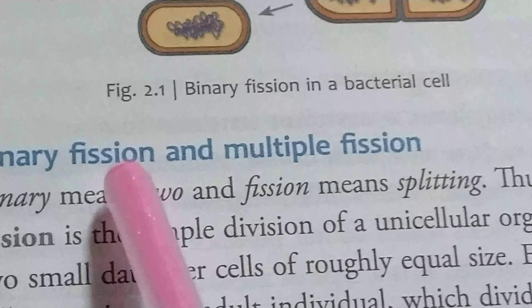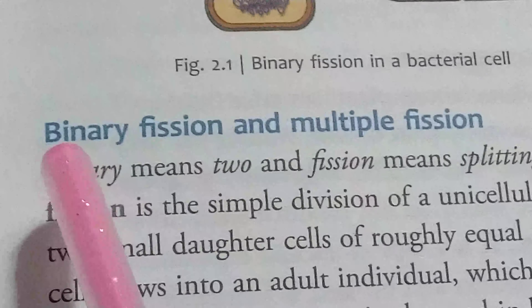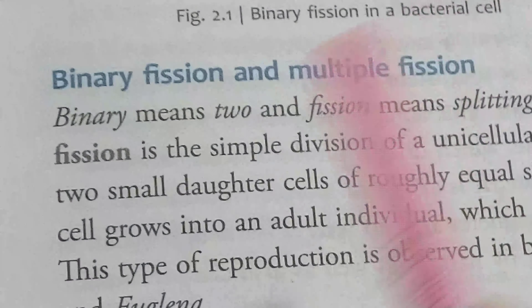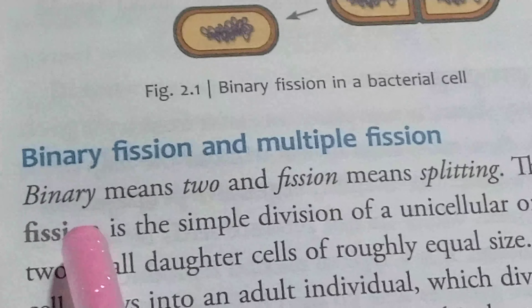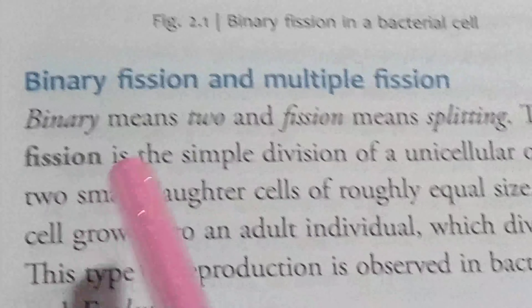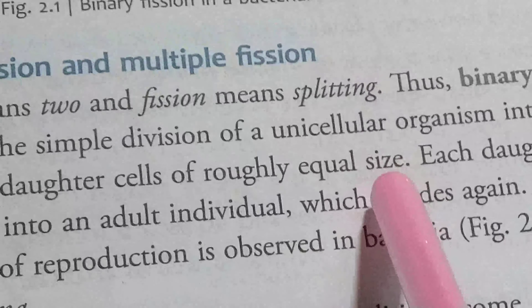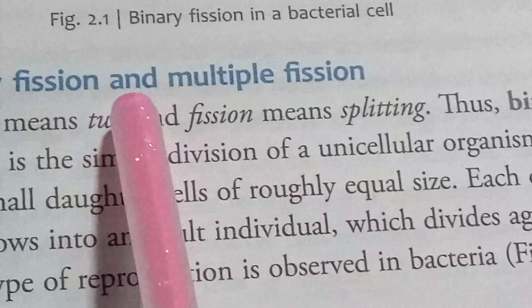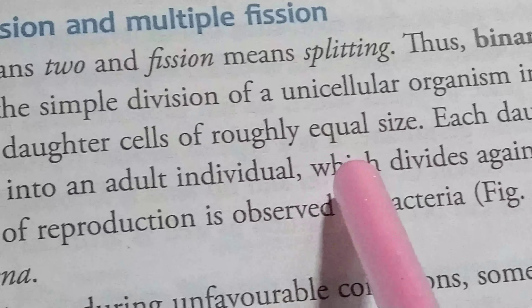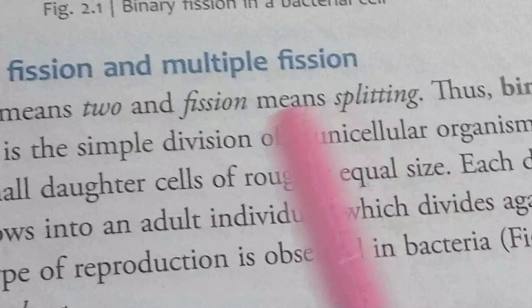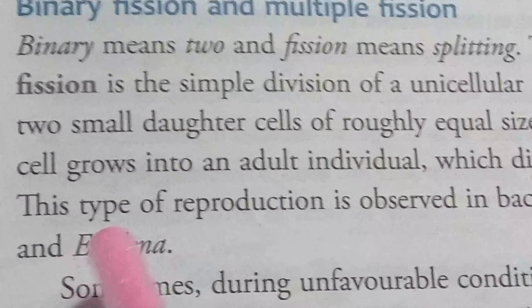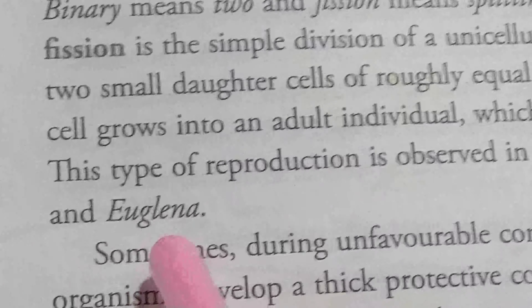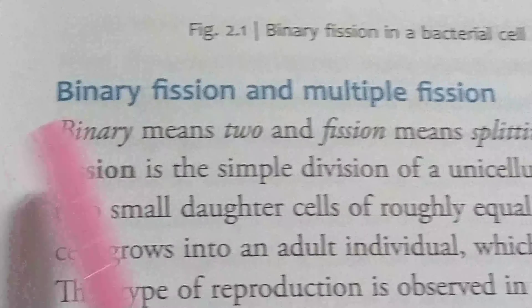First of all, binary fission and multiple fission. Binary means two and fission means splitting. So binary fission is the simple division of a unicellular organism into two smaller daughter cells of roughly equal size. In binary fission, the parent cell, which is a unicellular organism, splits into two equal-size daughter cells. Each daughter cell grows into an adult individual which divides again. This type of reproduction is observed in bacteria and Euglena.